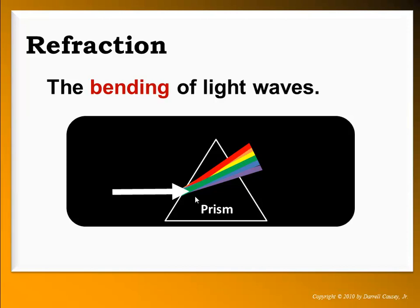Newton was a very religious man who struggled to come up with seven colors because seven was the number of God. As a kid, I always tried to find indigo and couldn't — because when you really look at it and analyze it, there are only six colors.